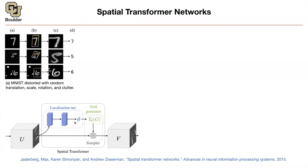I'm going to specify examples of theta. Then you're going to create a grid on the output, which is parameterized by the parameters you just predicted. You're going to use that grid to sample your initial image — sample this area — and that's going to be your output: the seven that is scaled, centered, and rotated.